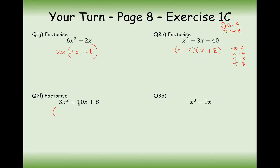Moving to the more tricky ones. Common factor first — no common factor here. So we're going to need a 3x in one bracket and an x in another bracket. Let's try putting 4 and 2 in these brackets. 2 times 3 gives us 6x, and 4 times x gives us 4x, so that gives us 10x — perfect, my first try has worked. So it's 3x plus 4 and x plus 2. Notice if I'd tried it the other way around, I'd have tripled the 4 when expanding, getting 12 add 2, giving 14x — not what I wanted.